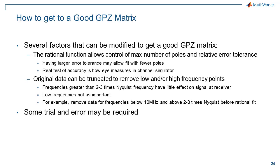Here are some tips to help achieve a good GPZ matrix. Use the controls for the rational function to change the maximum number of poles and adjust the error tolerance — both options can help get the best fit with the fewest poles. If there are high or low frequency poles, it can help to truncate the original data. Very low frequency data and data above 2 times the Nyquist frequency do not impact the equalized data and can often be truncated. Trial and error may be required to obtain the best fit with the fewest poles and zeros.